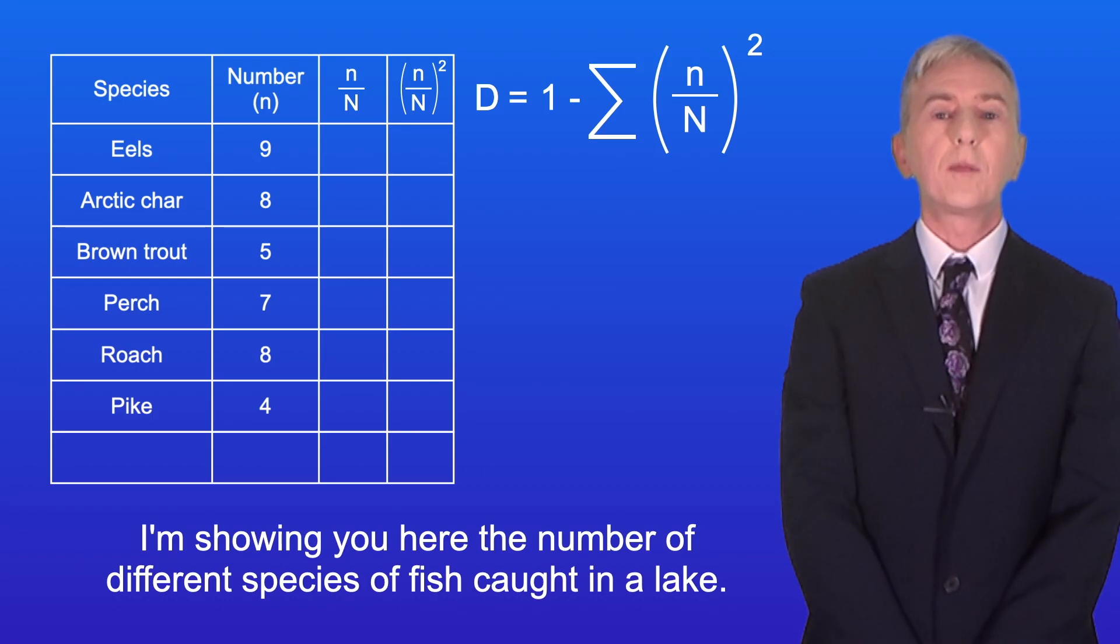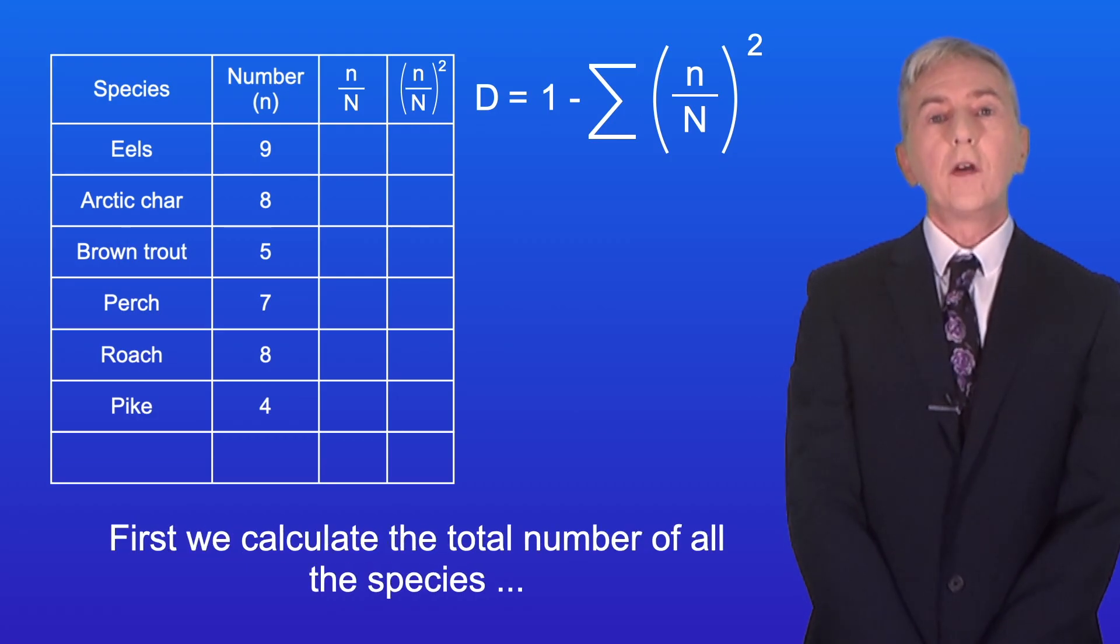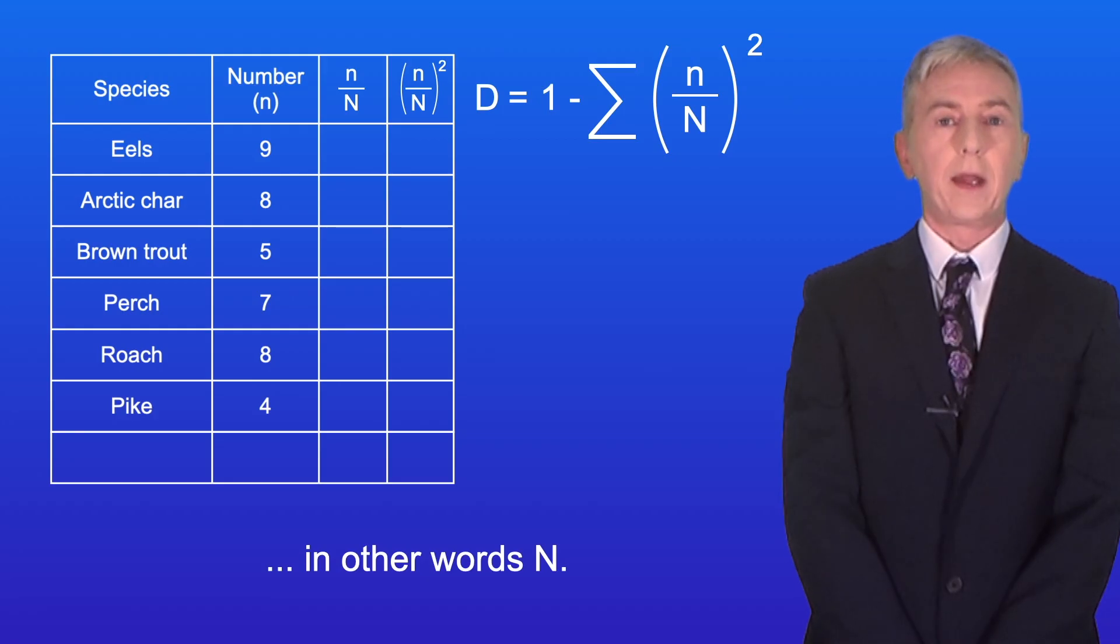Okay, I'm showing you here the number of different species of fish caught in a lake. I'm going to calculate Simpson's index of diversity. First we calculate the total number of all the species, in other words capital N. There are 41 fish in total.